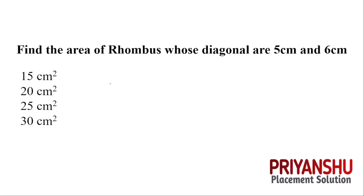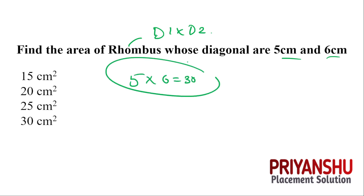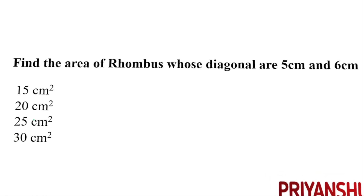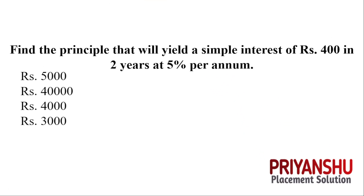The next question: find the area of a rhombus whose diagonals are 5 and 6. The area of a rhombus is diagonal one multiplied by diagonal two, so 5 multiplied by 6 is 30. The answer is 30. Questions are easy as I told you — watch the complete video, it's a very short video.